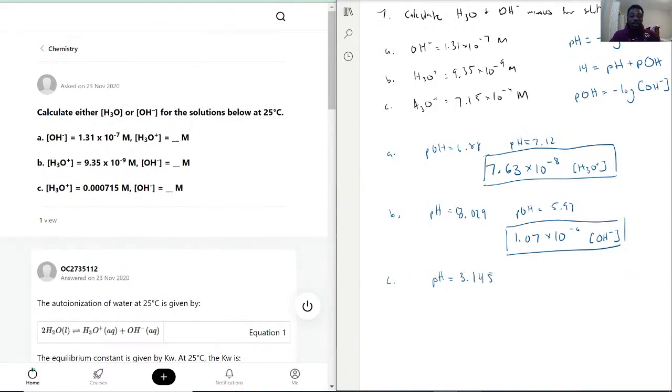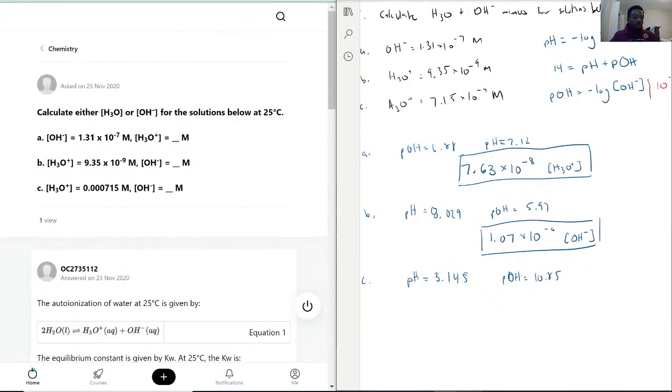To find pOH, we calculate 14 minus that answer, which gives 10.85. Then we do the conversion back using 10 to the power of negative that answer.